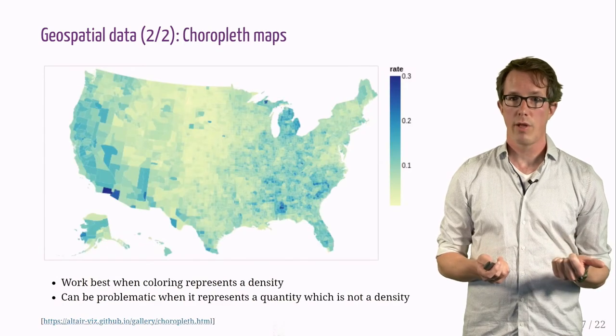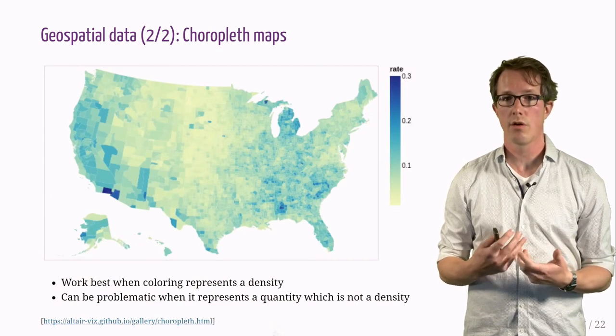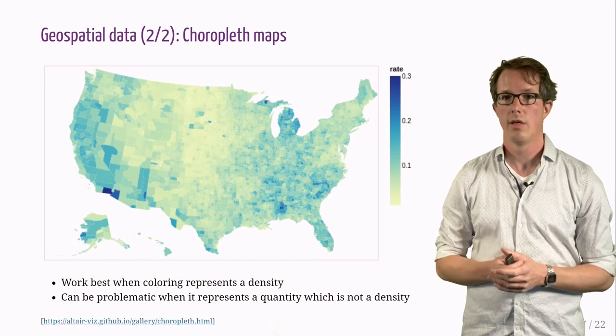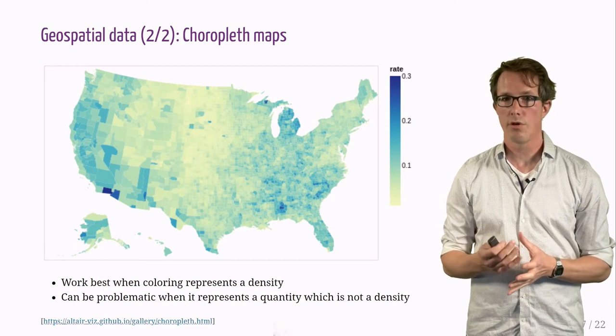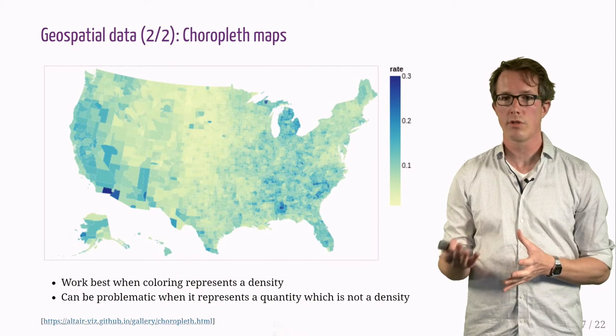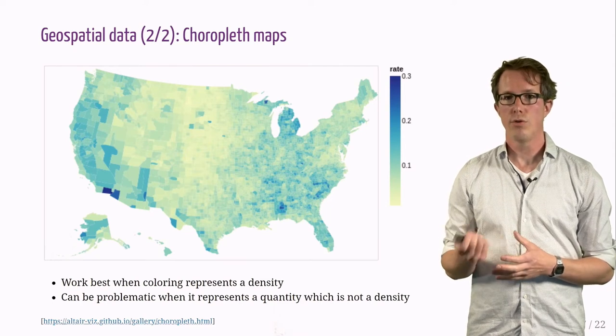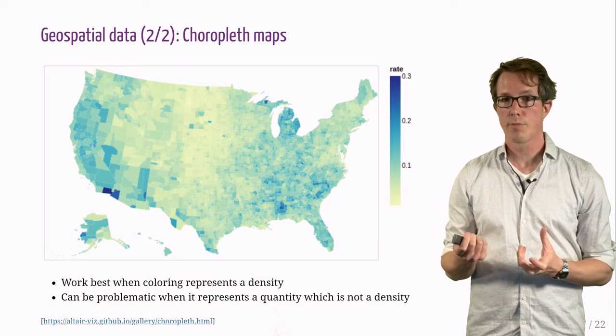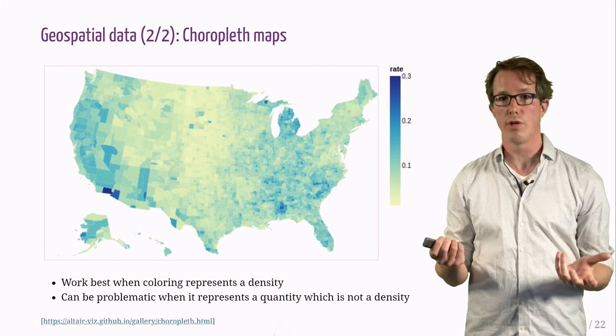Choropleth maps, like this one, work best when coloring represents a density. They can be problematic if the colors represent a quantity which is not a density. We are used to seeing choropleth maps such like this one, especially during election times.